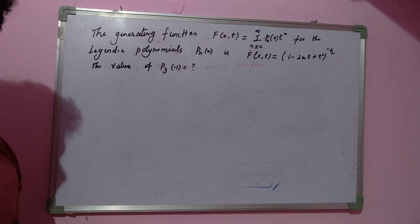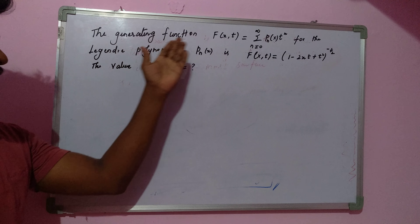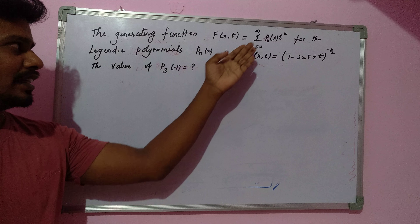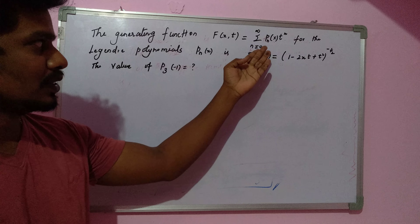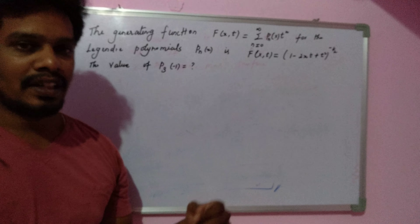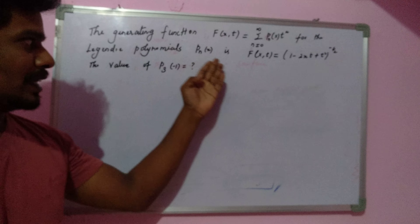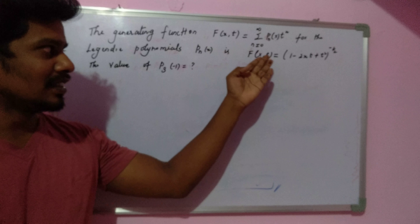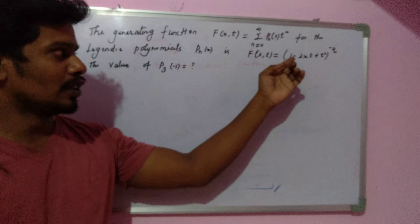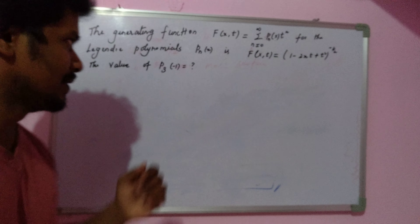Let's discuss the next question. The generating function f(x,t) equals the summation from n=0 to infinity of Pn(x) times t to the power n, for the Legendre polynomial Pn(x). It is given that f(x,t) equals (1 minus 2xt plus t squared) to the power minus one-half.